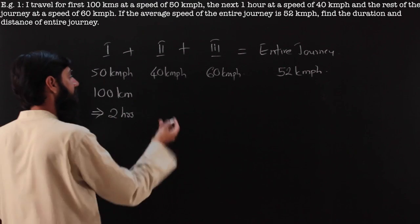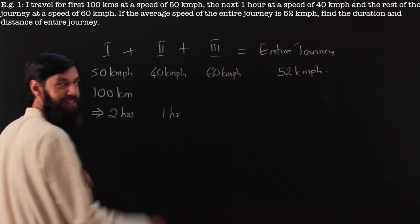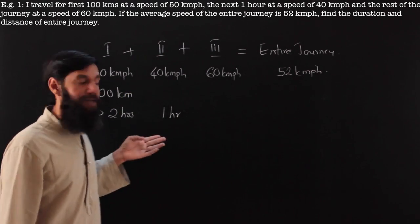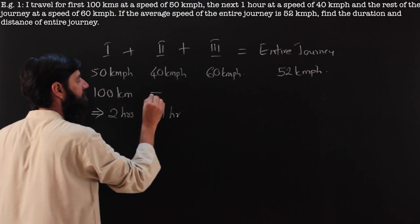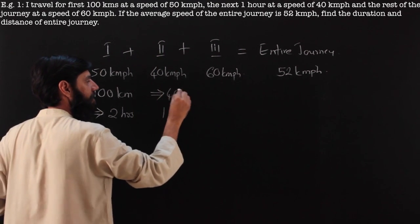In the second, it is given I travel for 1 hour. Speed is known, time is known, so obviously we can find the distance. The distance is going to be for 1 hour, that is 40 km.